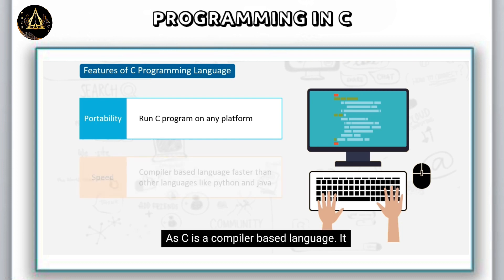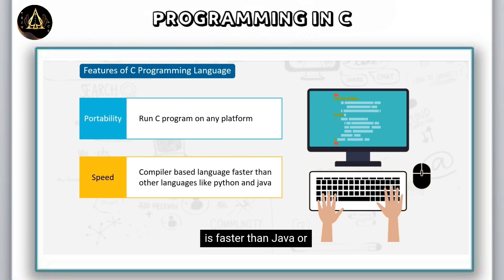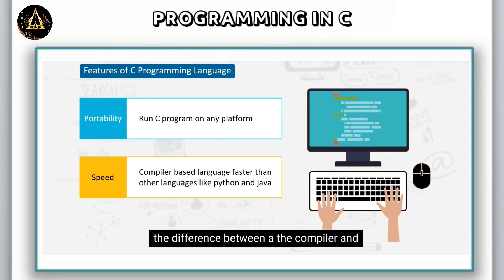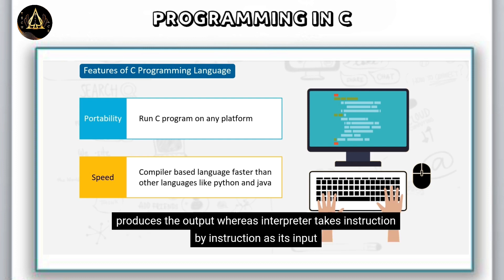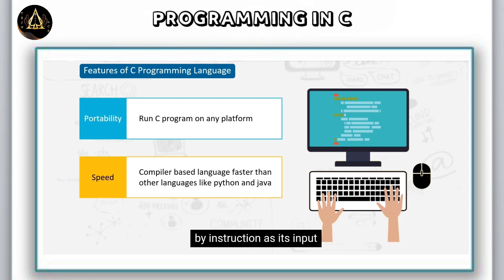As C is a compiler-based language, it is faster than Java or Python which are interpreter-based. The difference between the compiler and the interpreter is that the compiler takes the whole program as its input and then produces the output.